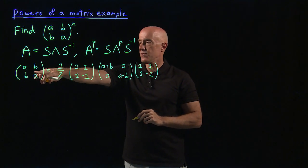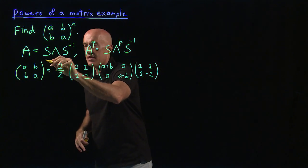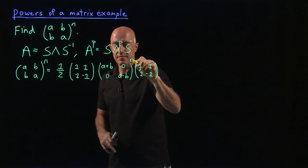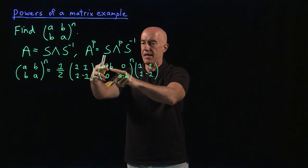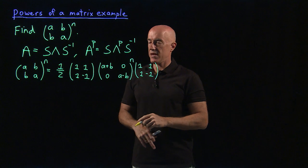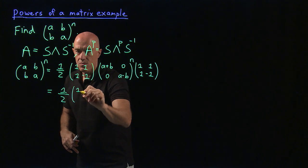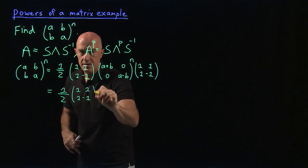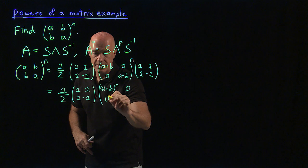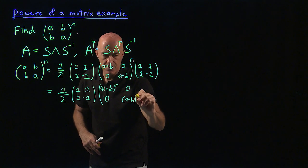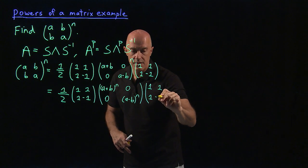We raise this to the nth power, so all we have to do to raise this matrix to the nth power is raise this eigenvalue matrix to the nth power, which is the same thing as A plus B to the nth. So this is simply 1 half times [1, 1; 1, minus 1], times [(A plus B) to the nth, 0; 0, (A minus B) to the nth], times [1, 1; 1, minus 1].